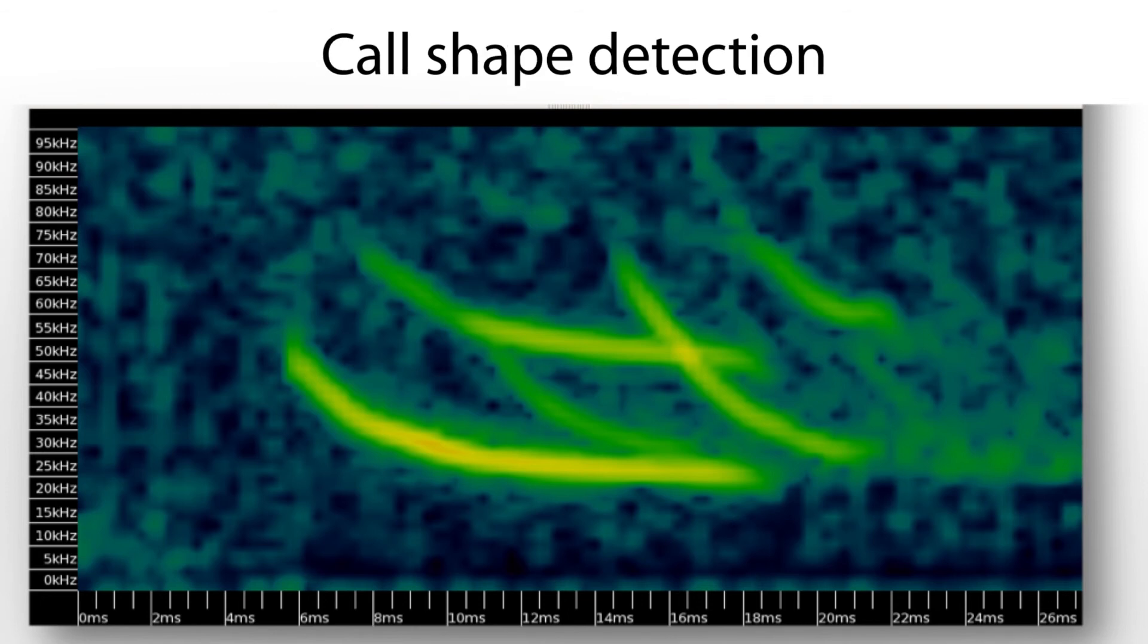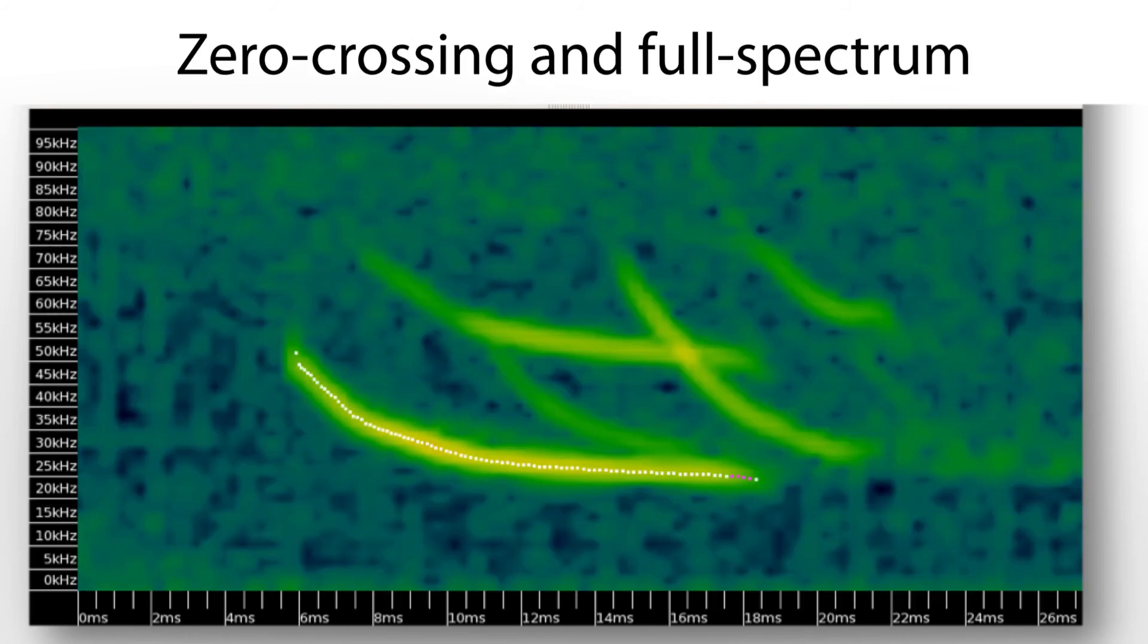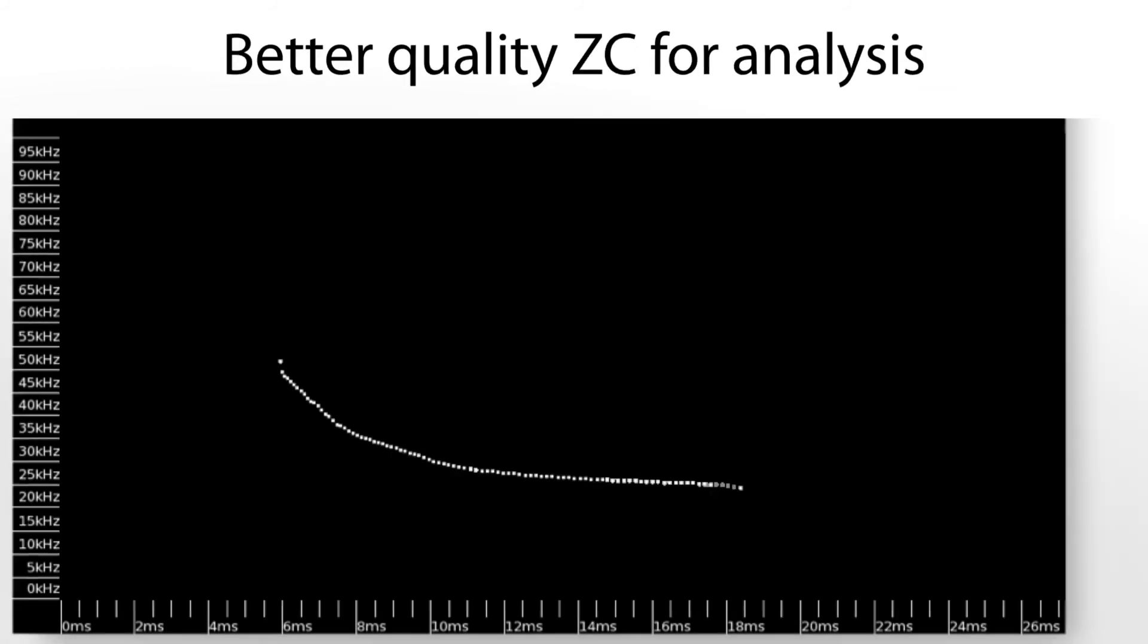Kaleidoscope looks at the overall shape of the call and then recognizes the chaos at the end of the call caused by the other bats is not part of the original call. So the original call is isolated and then converted to zero crossing. This provides a much higher quality zero crossing representation of the bat call.